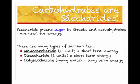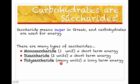Starch is a polysaccharide. There are three different types of saccharides: monosaccharide, 'mono' meaning one; disaccharide, 'di' meaning two; and polysaccharide, which means many.